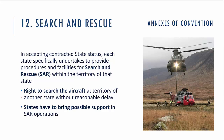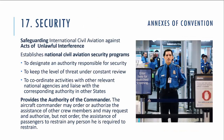Annex 12 covers search and rescue. It contains SARPs to provide procedures and facilitate search and rescue within the territory of any signatory state. It provides the right to search for aircraft in the territory of another state without unreasonable delay, and obliges states to bring possible support to SAR operations. Annex 17 covers security, safeguarding international civil aviation against acts of unlawful interference. It establishes national civil aviation security programs to designate an authority responsible for security, to keep the level of threat under constant review, and to coordinate activities with other relevant national agencies and liaise with corresponding authorities of other states.